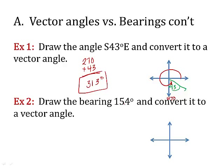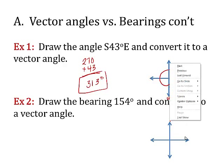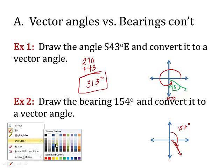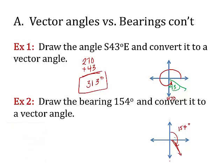Draw the bearing 154 degrees and convert it to a vector angle. Now, this is different. It doesn't tell us south or east, so we have to start measuring here. If this is zero, this is 90, this is 180, so that means 154 is in here somewhere. So this measurement right here is 154 degrees.